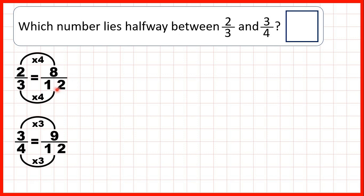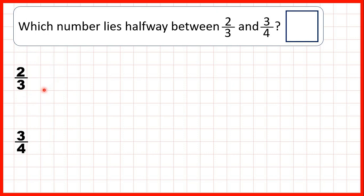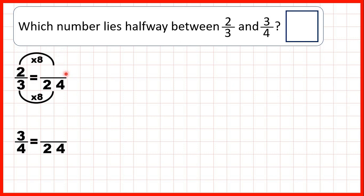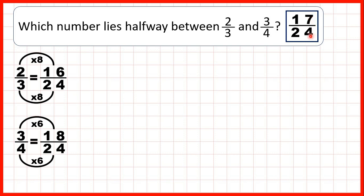So instead, rather than using the lowest common multiple of three and four, let's use a different larger common multiple. Twenty-four is in the three and the four times tables, so let's find equivalent fractions which have a denominator of twenty-four. Three times eight is twenty-four, two times eight is sixteen, four times six is twenty-four, and three times six is eighteen. Now we know the number in the middle of sixteen and eighteen is seventeen, so that must be seventeen over twenty-four.